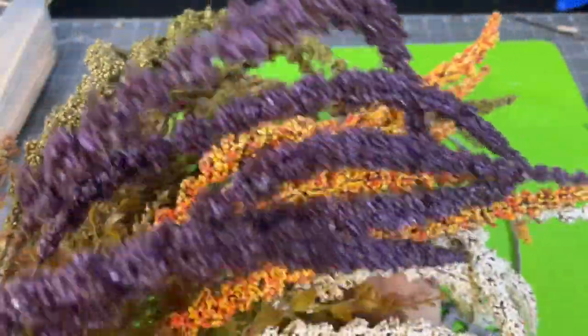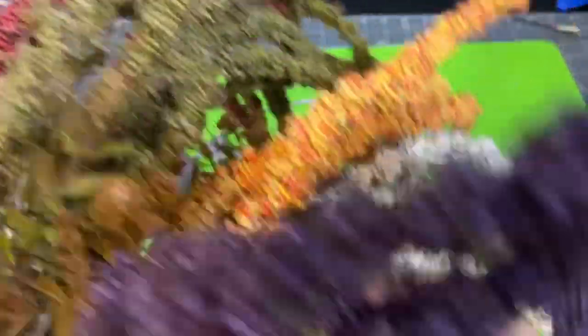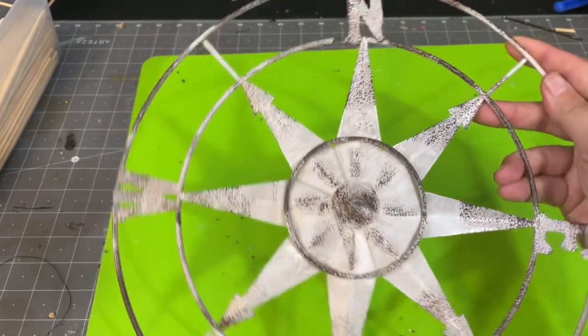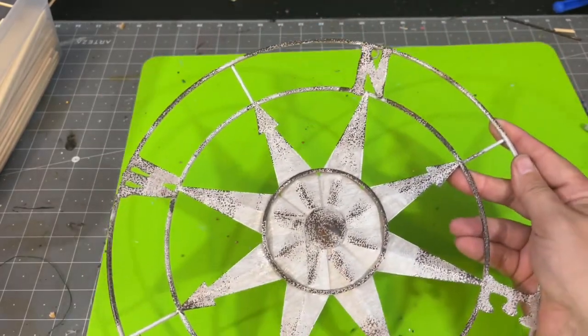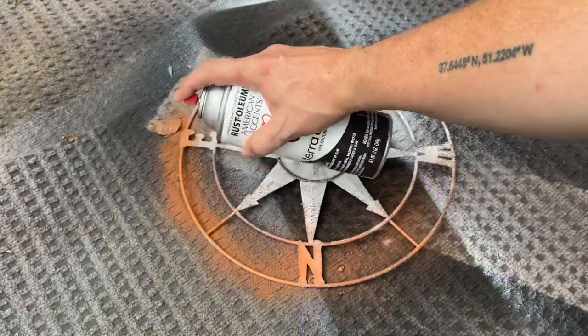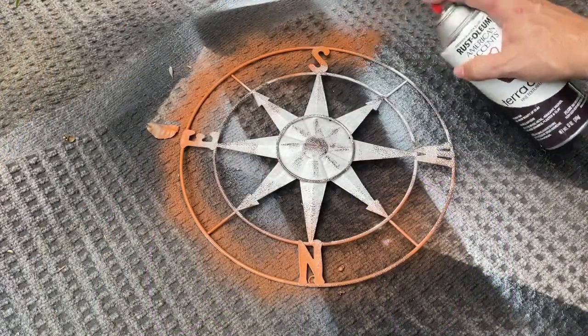And for my next project I'm going to be using some of these floral sprigs from Dollar Tree. I'm not exactly sure which colors I'm going to use. Then I have this compass that I picked up for $1.99 at the 99 cent only store in Los Angeles. The first thing I did was take my compass outside and I spray painted it with this terracotta spray paint. I'm doing small spritzes here.